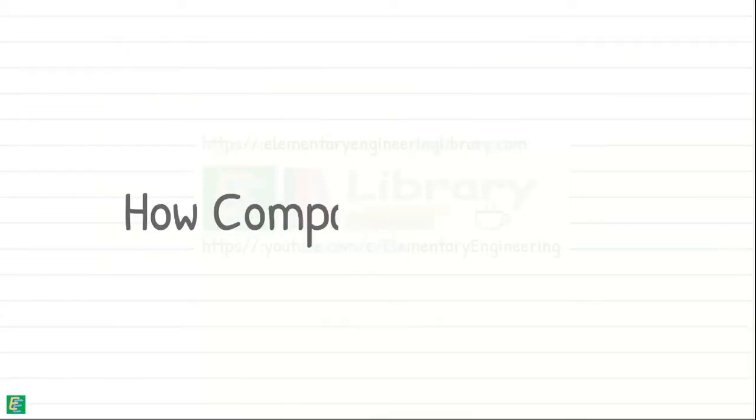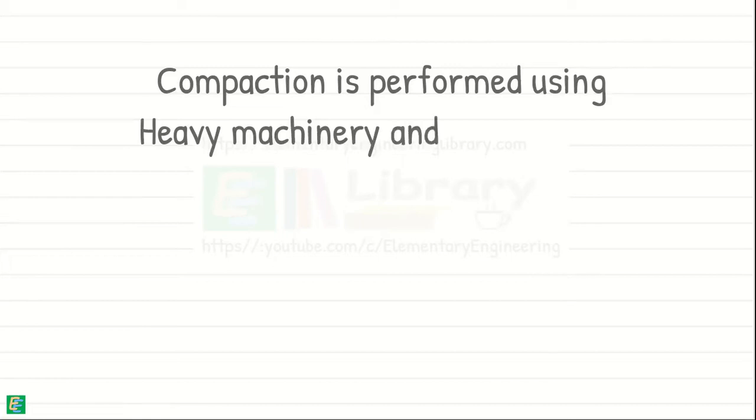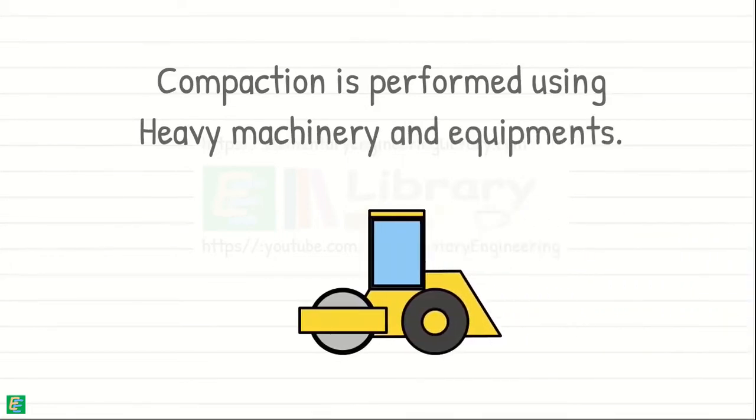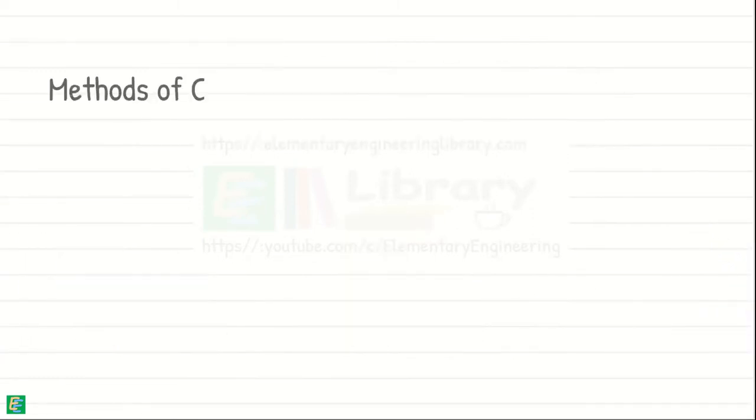Great! But how do we do this compaction thing? Compaction is commonly performed using heavy machinery and equipment, such as vibratory compactors, rollers, or compacting plates. There are different methods of compacting the soil, such as vibration, impact, kneading, and pressure.